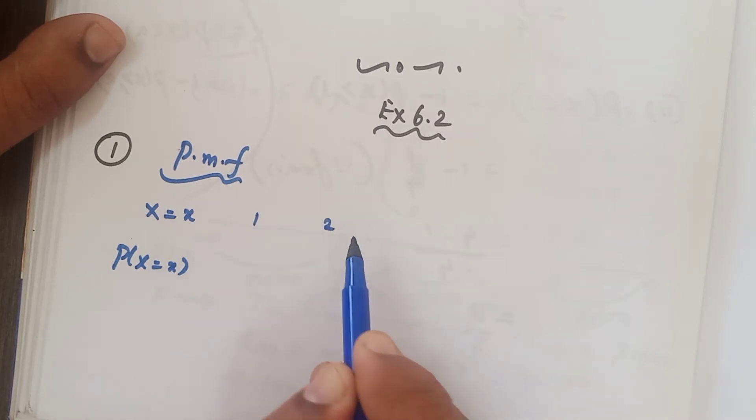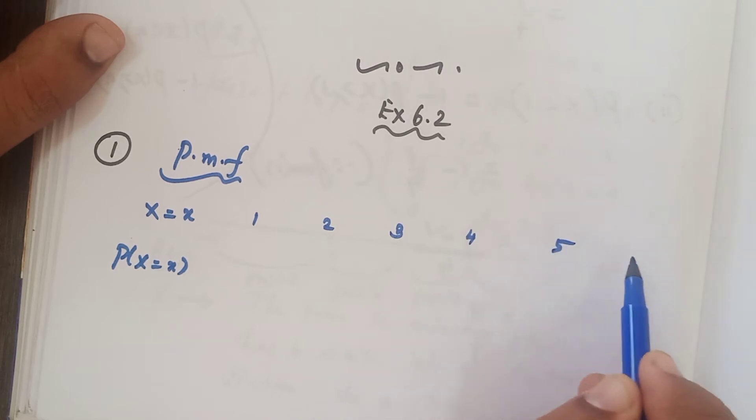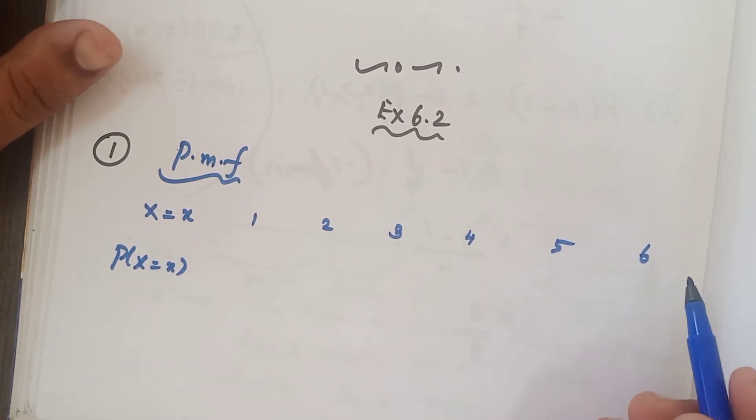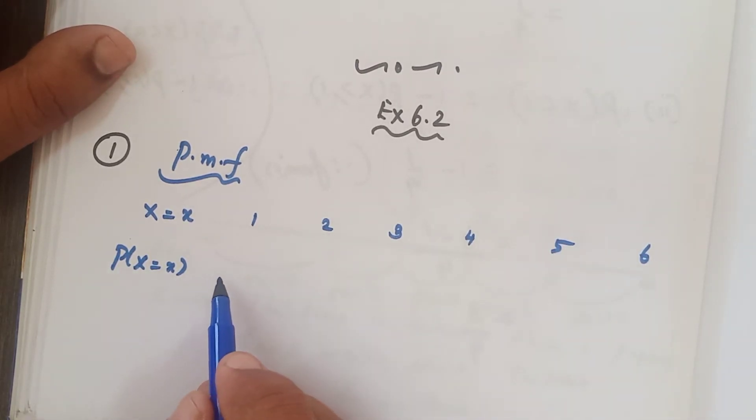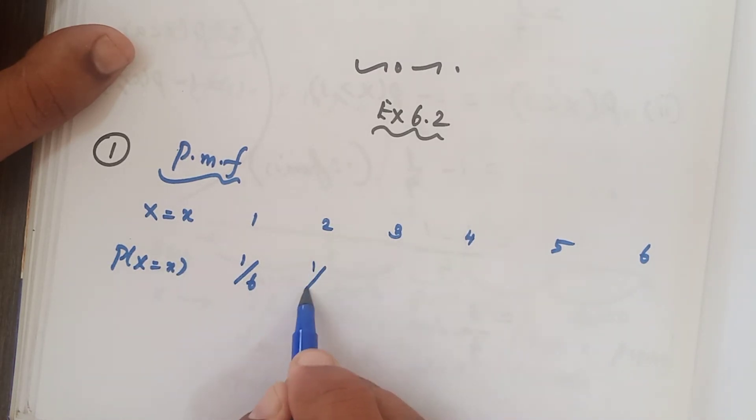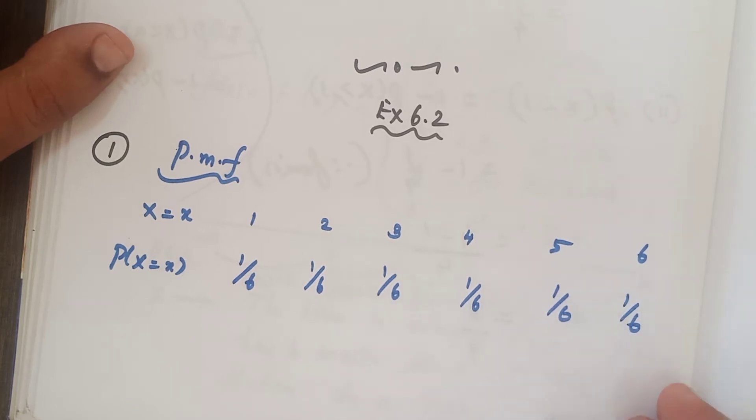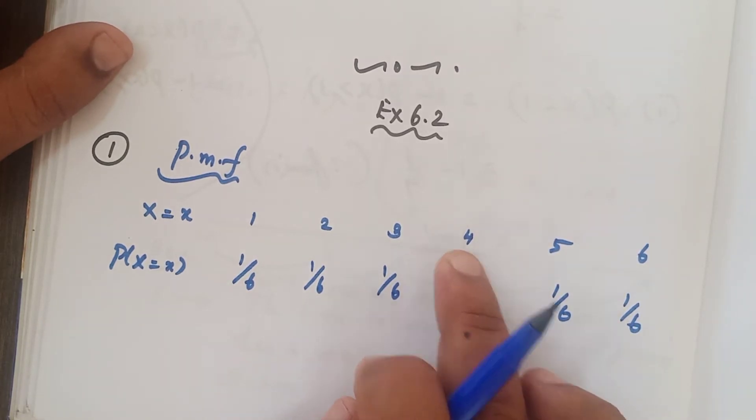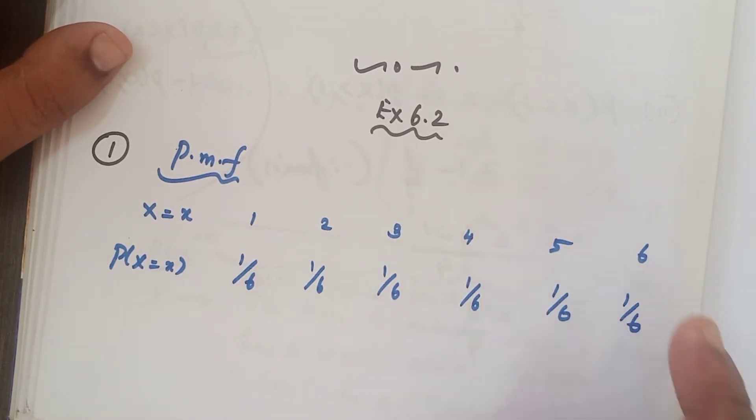1, 2, 3, 4, 5, and 6. Now we have to write probability value for each and every number. Only 1 will be there, so 1 out of 6. Only 1 two will be there, so again 1 by 6. Only 1 three will be there, 1 by 6. So each and every one probability value is 1 by 6.